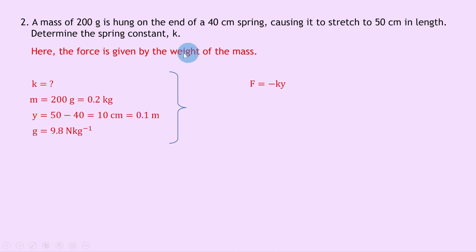Because we said the force is given by the weight of the mass, then we can rewrite F as equal to the weight, which remember is given by w equals mg. So we can write mg here is equal to minus ky, and then substituting in our numbers we have 0.2 times 9.8 is equal to minus k times 0.1.